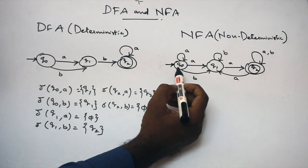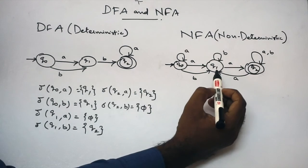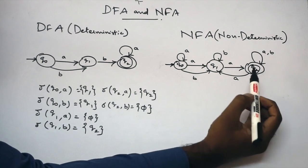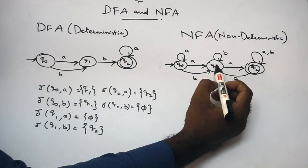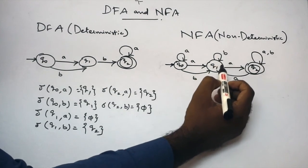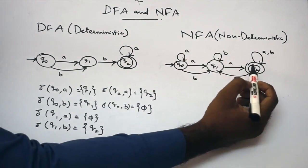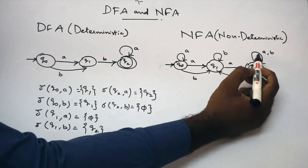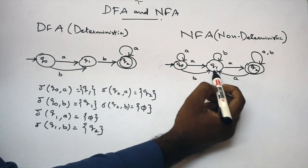Next, Q0 on B gives Q1. Next, Q1 on A gives Q2 — it is determined. Next, Q1 on B gives Q1. This is the same. In this transition, Q2 on A gives Q2 and Q1.